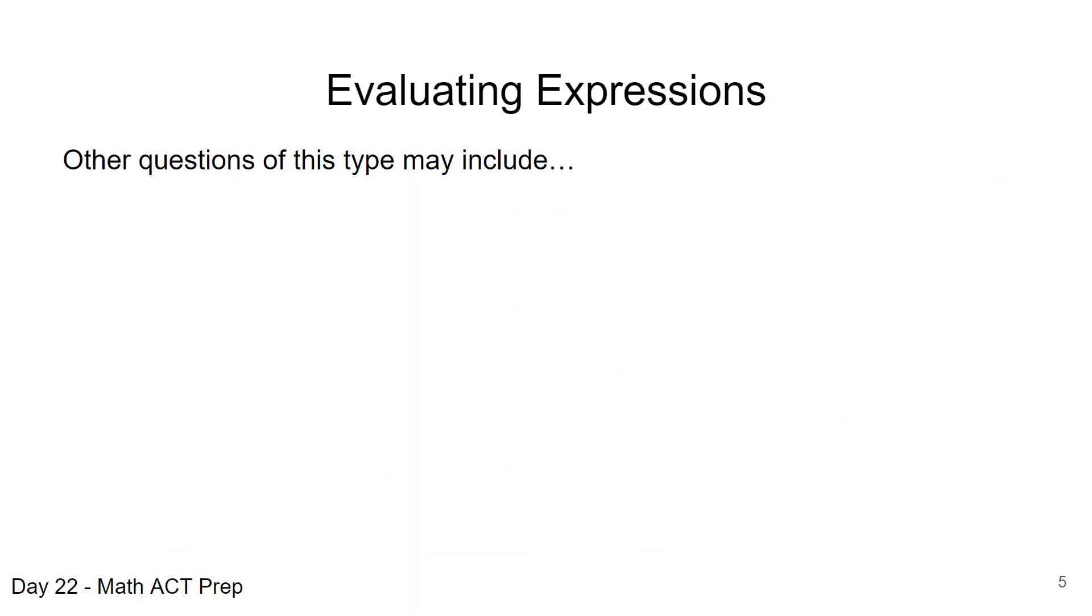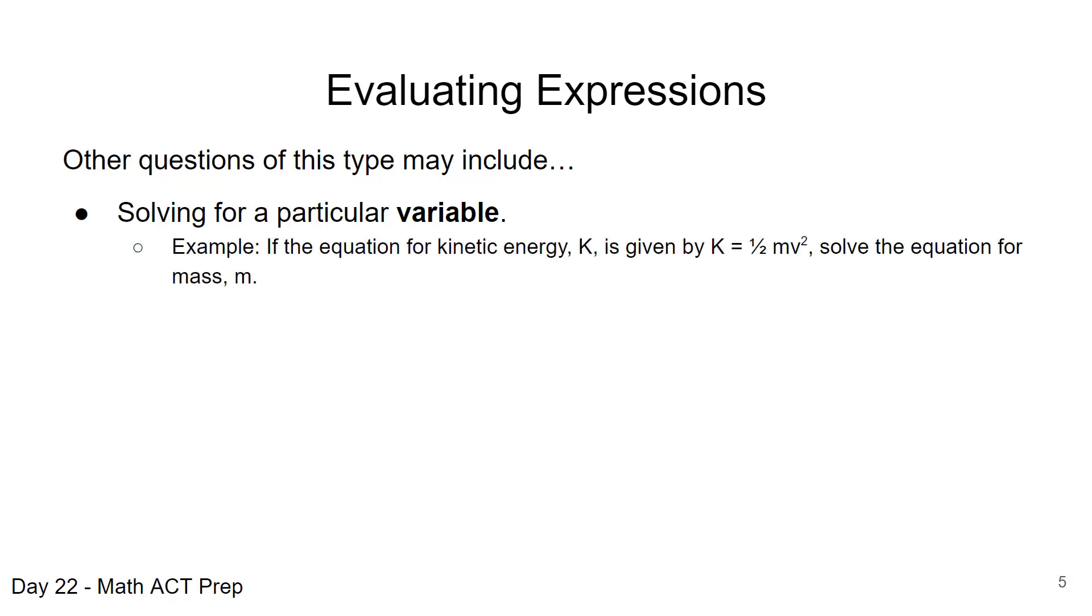There are a couple of other types of questions that we see in this area. Sometimes you may be asked to solve for a particular variable, and this is kind of how we worked the previous question. We solved for v and then we plugged in. This example asks us if the equation for kinetic energy K is given by K equals one-half mv squared, solve the equation for mass m. On a lot of these type of questions, notice that sometimes they will pull from our science world for formulas or equations, and you don't have to worry, you don't have to have any concept of what kinetic energy is to solve this particular question. We are just given an equation and it's solved in terms of one variable and we want to solve maybe in terms of another.